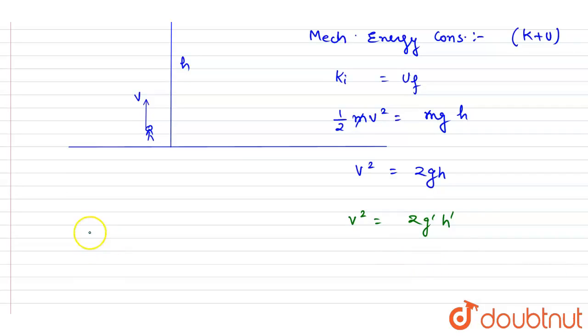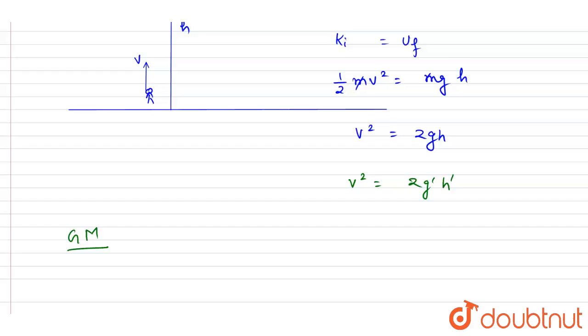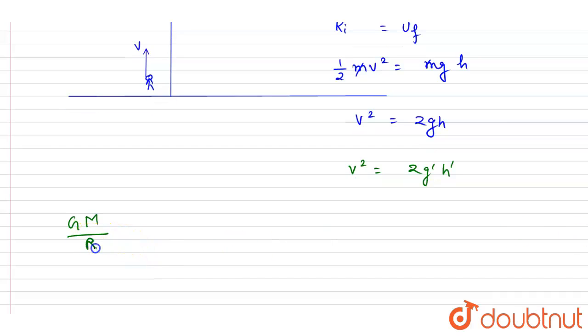We know that the gravitational acceleration is equal to G mass of the planet by radius of the planet whole square.